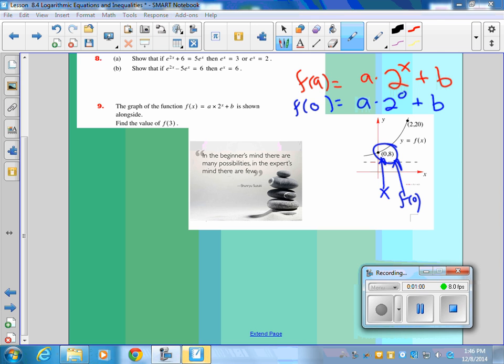So we can, instead of saying f of 0, we can say 8. So one point can help us look at a times, what's 2 to the 0? 1, so it's a plus b. There's one equation there.